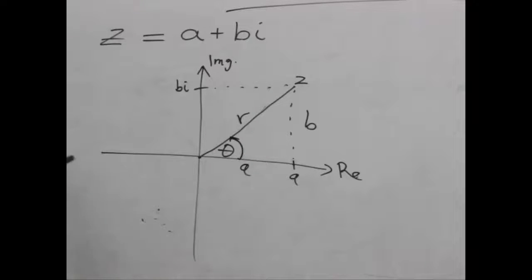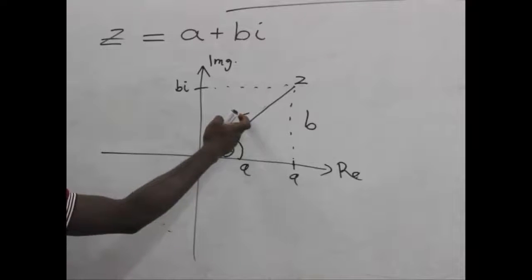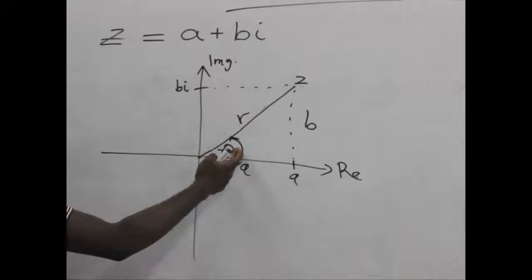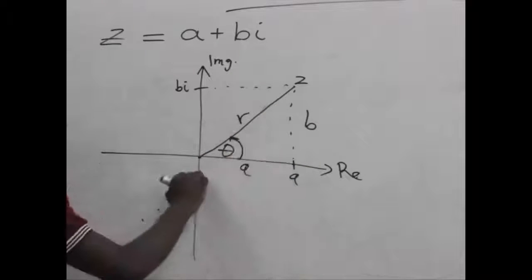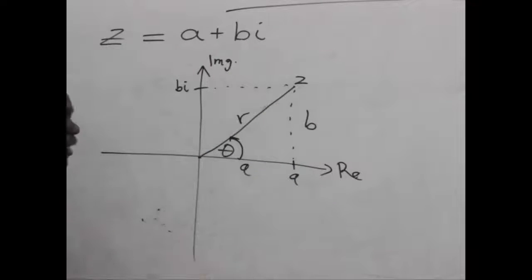Now, with this length R, angle theta, the vertical magnitude B, and the horizontal magnitude A, let's try to find the trig ratios and see what we can do with those trig ratios.